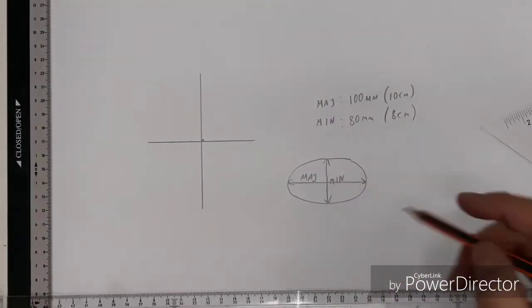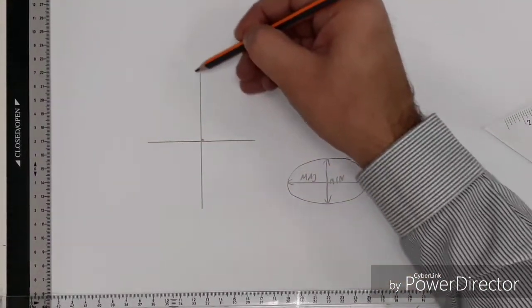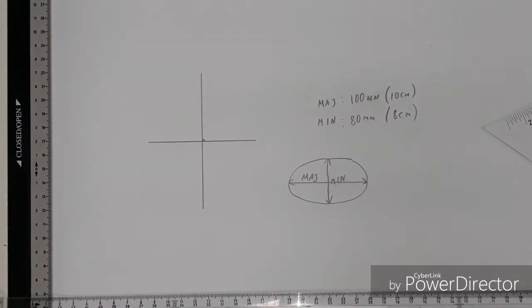So theoretically, here today, my ellipse is going to be forming this shape here. Now, what do we do next with the trammel?